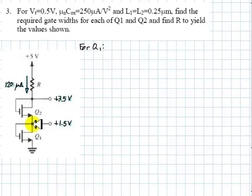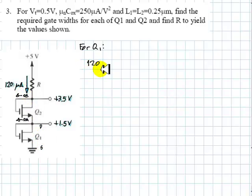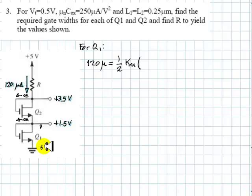Let's concentrate on this diode-connected transistor at the bottom. The current in this conductor is 0 amps; the current in this conductor is also 0 amps — it's the gate current of a MOSFET. That means that the drain-source current for this transistor is 120 microamps. Let's write that: 120 microamps equals one-half KN times this voltage minus VT squared, because it's the same.